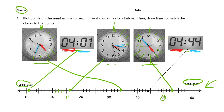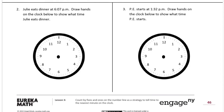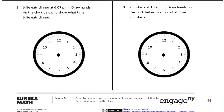Now we're done with number one. Number two: Julie eats dinner at 6:07 PM — draw hands on the clock below to show what time she eats dinner. Be careful when you draw clock hands that the hour hand looks shorter than the minute hand, so we can tell which is which. I'll draw the hour hand first — remember, hours come first, minutes come second.